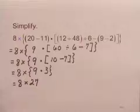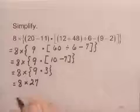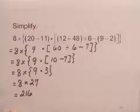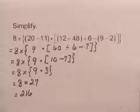And finally, I just have one operation left to perform, the multiplication 8 times 27, and that is 216. And 216 is the simplified form of that expression.